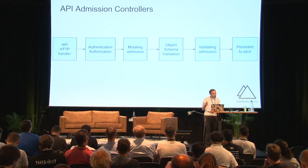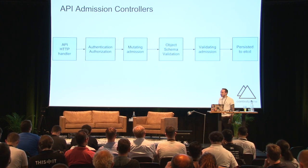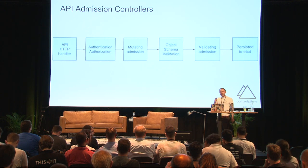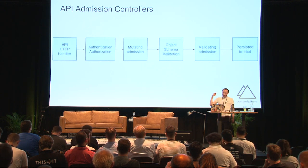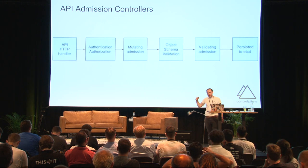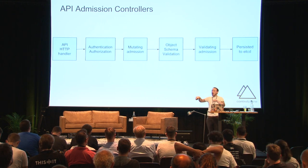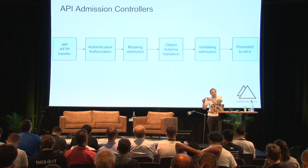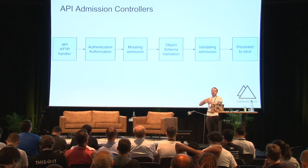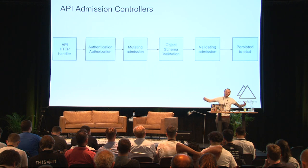If all things are well and good and everything has been validated, then all the API server does is persist that call to etcd, at which point the scheduler and controller manager are polling etcd for structs in various different states — with nodes, without nodes, various states of initialization — and thus you have the distributed, asynchronous nature of the control plane. It's very elegant.